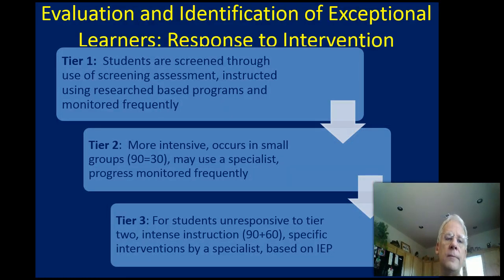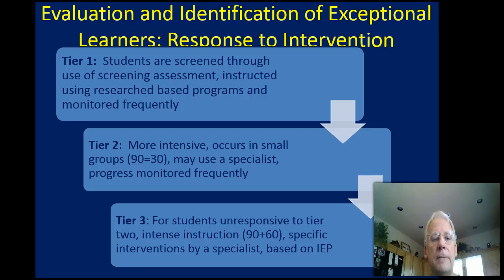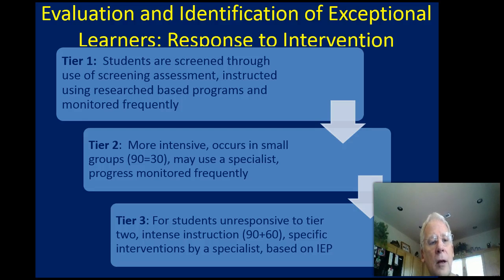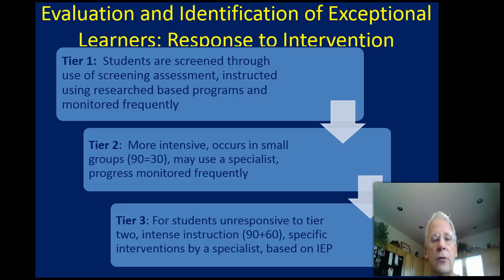At Tier 1, students are screened through the use of a screening assessment — usually a curriculum-based assessment that assesses where the student should be relative to the curriculum they're in. We look for research-based, effective instruction, and students are monitored probably three to four times a year. In Tier 1, we could still have students that have difficulty, so accommodations and modifications might be made to help those particular students.